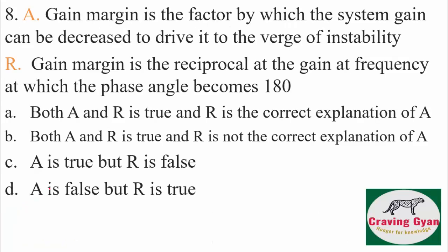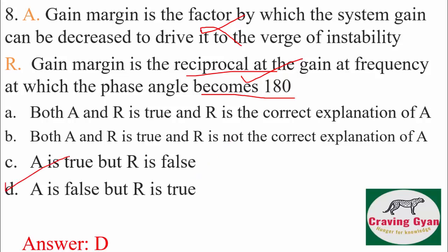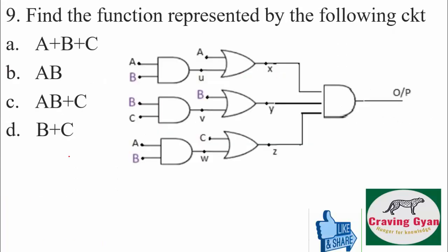Eighth question — assertion/reason: the assertion states that gain margin is a factor by which the system gain can be decreased to drive it to the verge of instability — this statement is wrong. The reason states that gain margin is the reciprocal of the gain at the frequency at which the phase angle becomes 180 degrees — the reason is correct, but the assertion is wrong. So option D is going to follow.